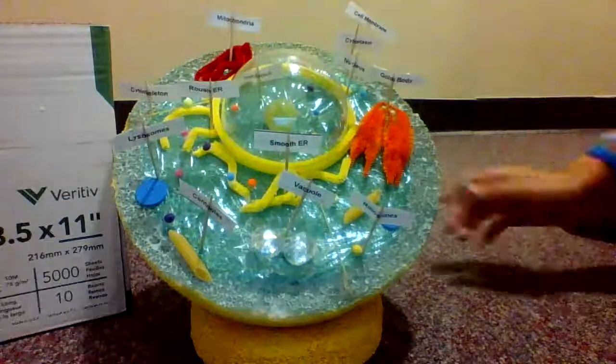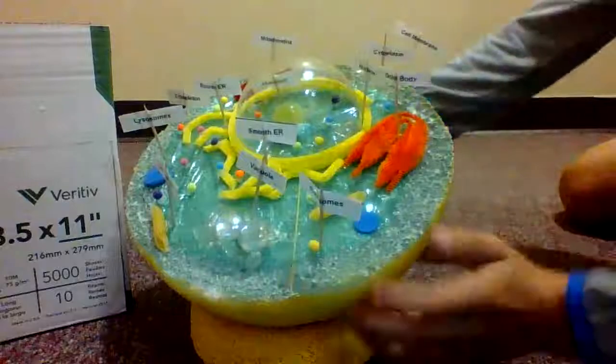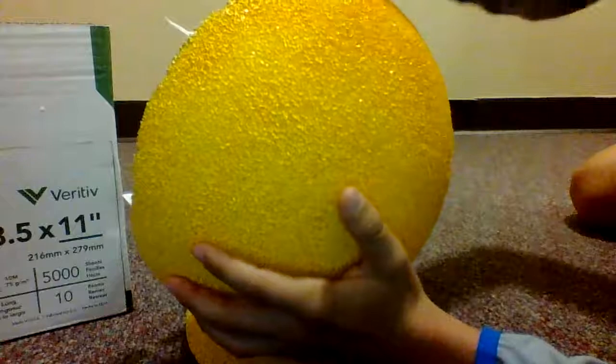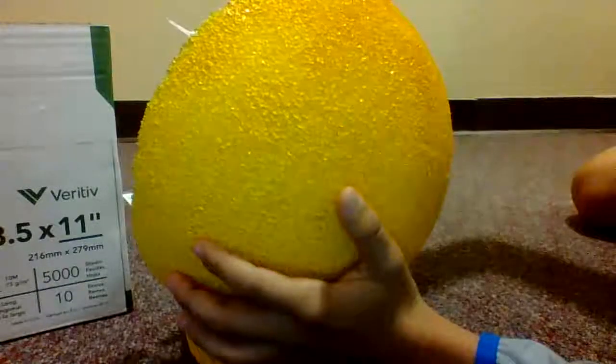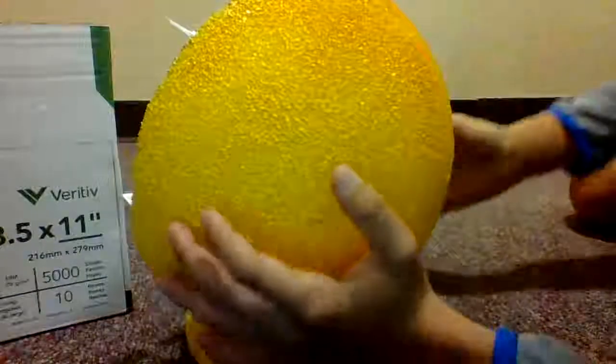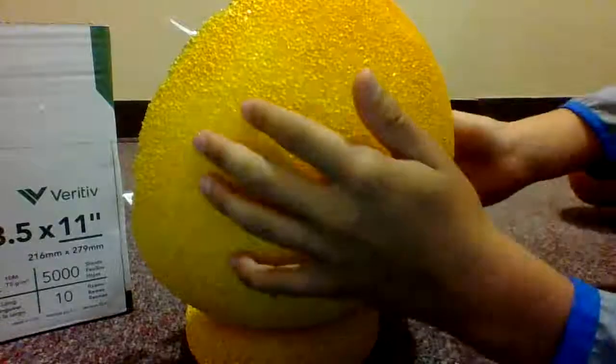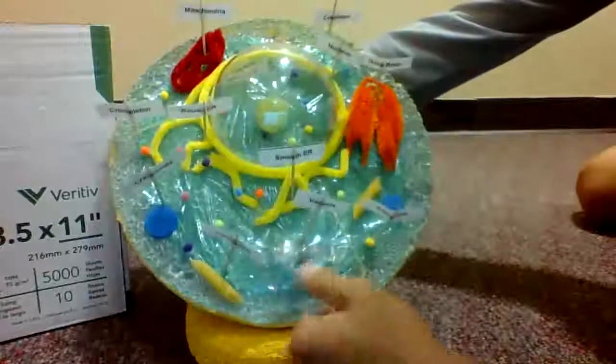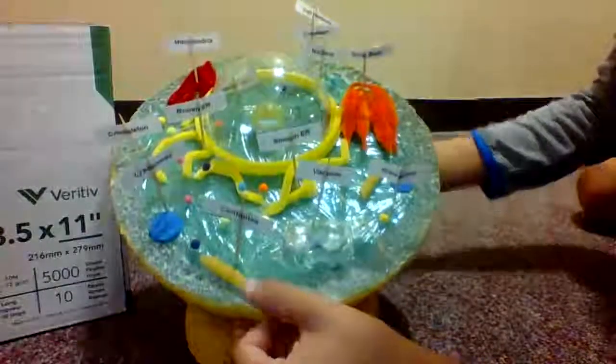Now we're going to take it outside the cell really quick, and this is the cell membrane, this yellow stuff. And it is basically the protector, and it lets things in and out, it's semi-permeable, which lets some things out, so it's basically like a gate.